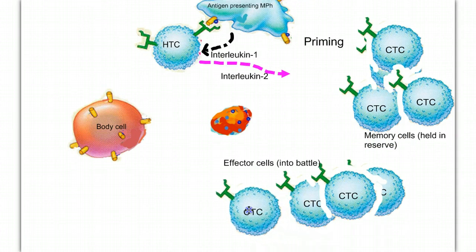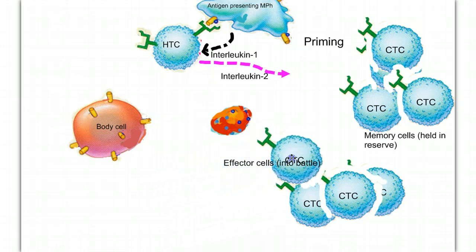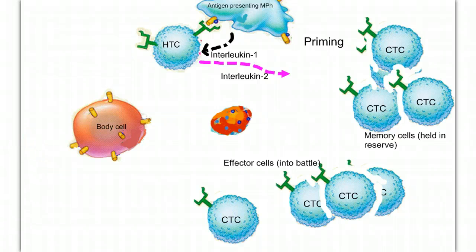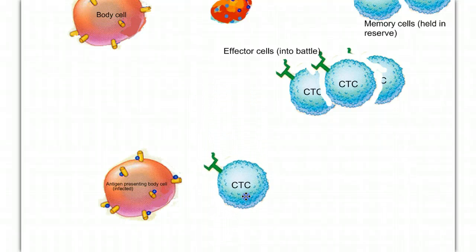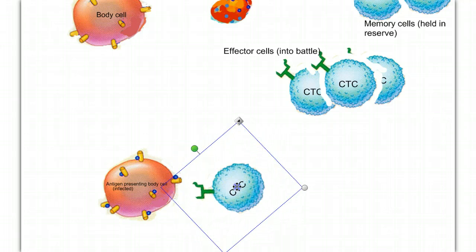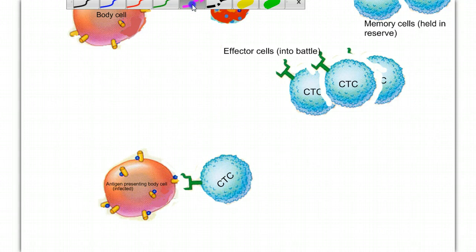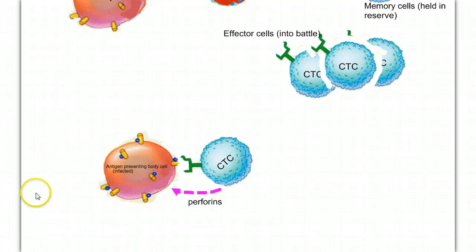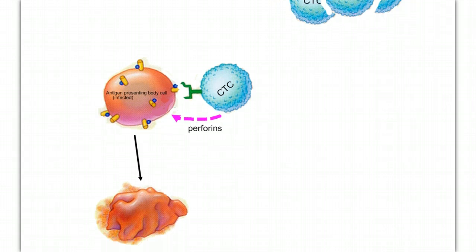The effector cells move through the body looking for infected body cells. They ignore healthy body cells with MHC markers, and they ignore the pathogen with its foreign antigens. What they're looking for is a body cell that has been infected — an antigen-presenting cell. When the cytotoxic T-cell sees an infected body cell, it goes into action. It binds to the MHC-antigen complex and releases a chemical called perforins. In a touch-kill response, the perforins punch holes in the infected cell, causing it to lyse, spilling out its contents and preventing the spread of those pathogens. So by sacrificing our own body cells, we're protecting the health of the healthy cells and the individual in total.